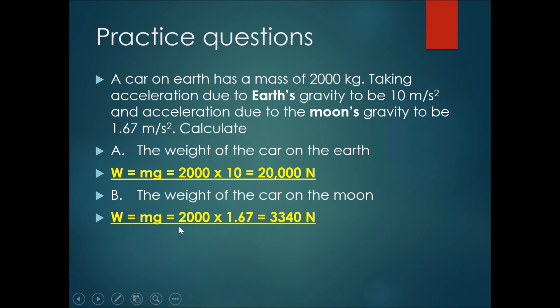The weight of the car on the moon would be W equals mg. The mass remains the same at 2000. However, the gravity on the moon is 1.67. Therefore the weight of the car on the moon will be 2000 times 1.67 which gives you 3340 newtons of weight only on the moon.